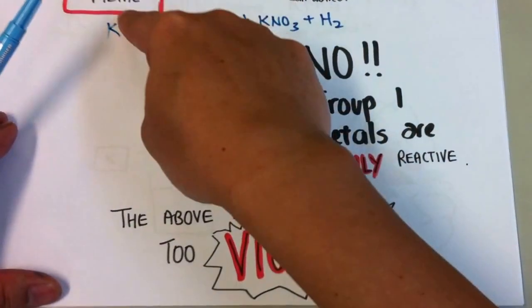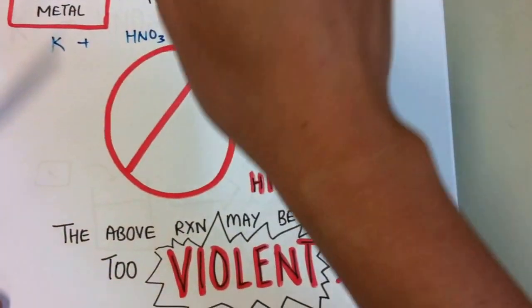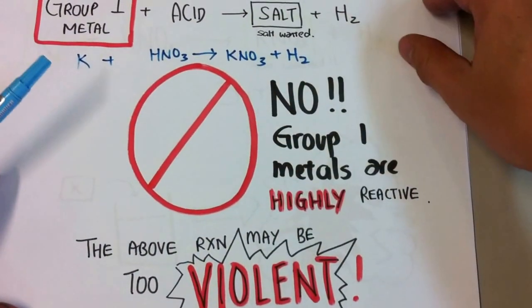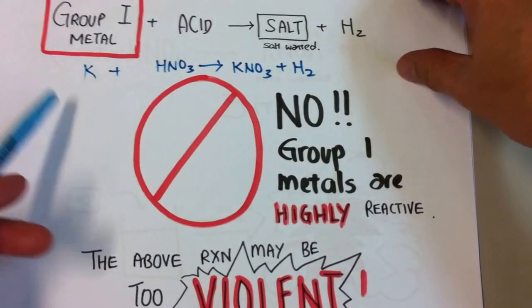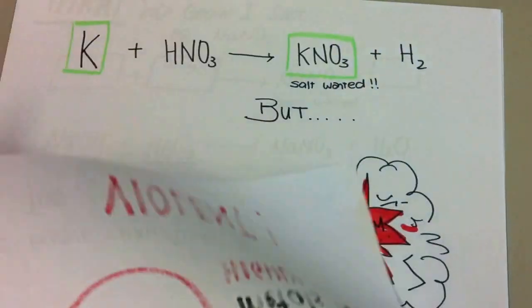Do not put a group one metal, a reactive metal, into acid. Even in water, you will get fire. You will catch fire. So please do not do that. This is very dangerous.